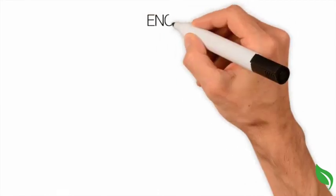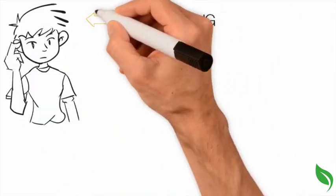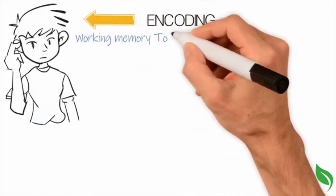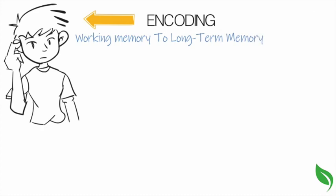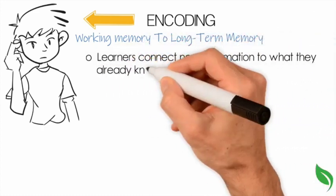Encoding. Once we are conscious of information in our working memories, we want to encode the information into long-term memory. Encoding is made easier when learners connect new information to what they already know.